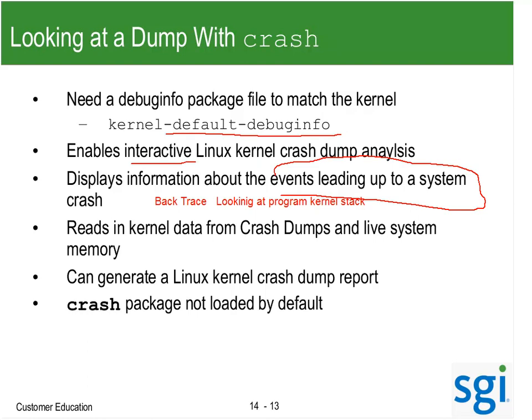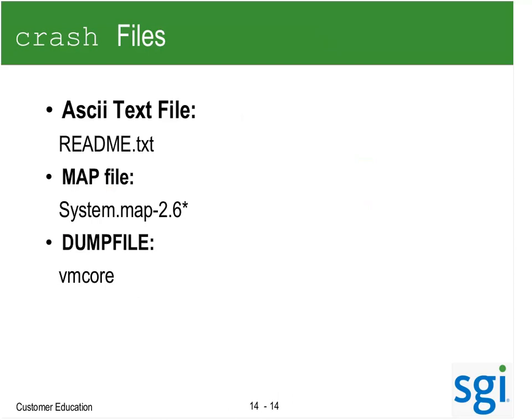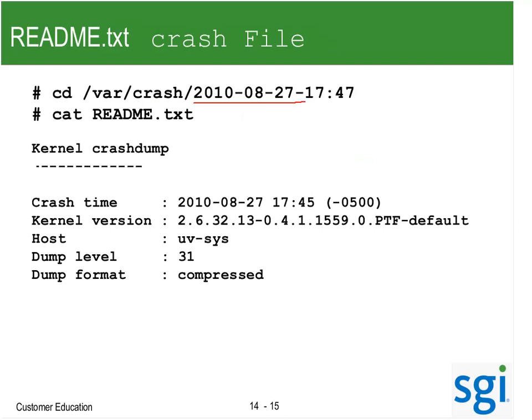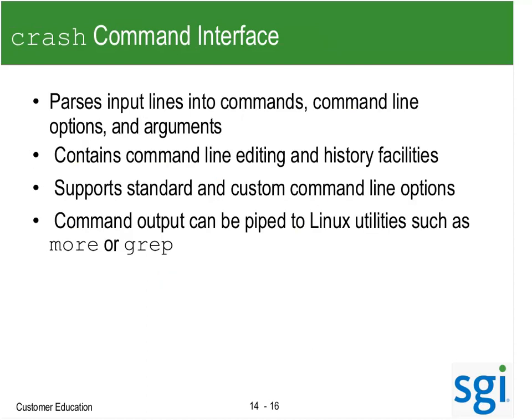Crash can look at data from a dump or a live system, and we can generate a quick report. Crash is being loaded by default right now — it was not in Tempo where this presentation originally came from, so I'm not worried about it. In that crash directory we're going to have a README file, a system map for symbol tables, a core, the debug info, and the actual kernel. Crash takes command line arguments, has command line editing, and you can use grep and more within Crash.